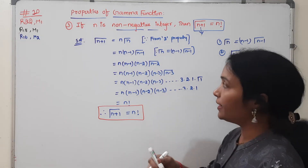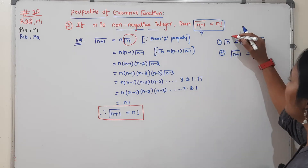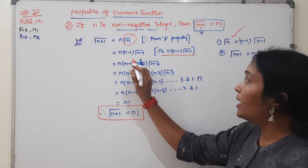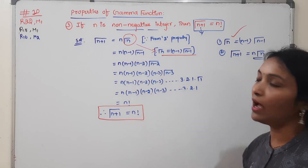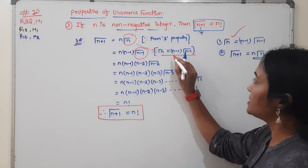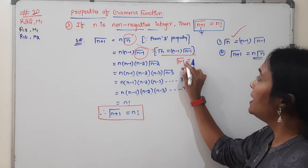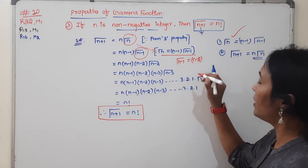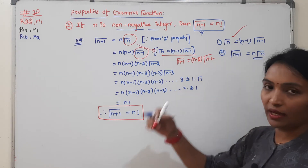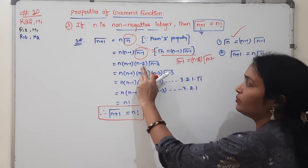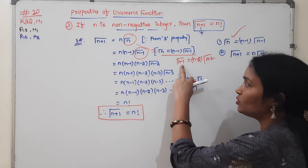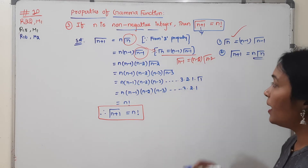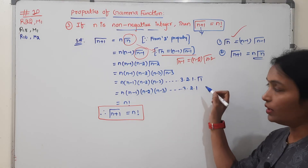From the second property, Gamma(n) = (n−1) × Gamma(n−1). Using this property again, Gamma(n−1) = (n−2) × Gamma(n−2), and Gamma(n−2) = (n−3) × Gamma(n−3). Continuing this process down to the last step, we get 3 × 2 × 1 × Gamma(1).